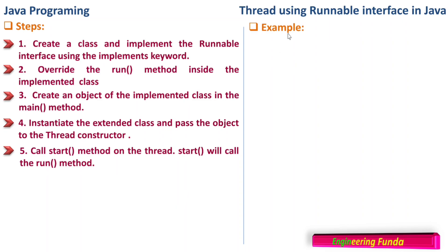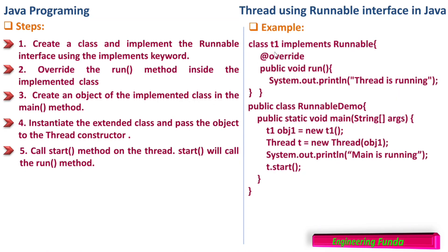It will get more clear when we see the example. So here is the example: we are creating a class T1 that implements the Runnable interface. In that class, we override the run method as public void run, and inside it we write System.out.println with the message 'thread is running'. Now we have the public class RunnableDemo containing the public static void main method. T1 is a runnable object, so we create an object: T1 obj1 = new T1.